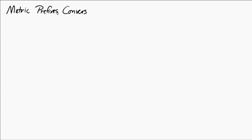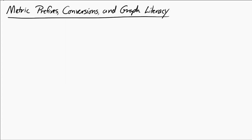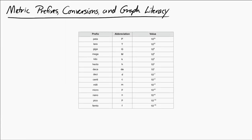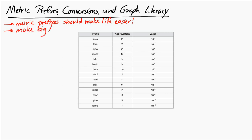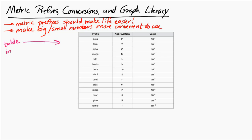Let's take a look at metric prefixes, conversions, and graph literacy. Metric prefixes are just a way to make your life easier — they allow us to look at really big and really small numbers in a more convenient way. I'm going to show you the table of metric prefixes that's given to you in the data booklet, so you don't have to memorize this. You just have to know how to use it.